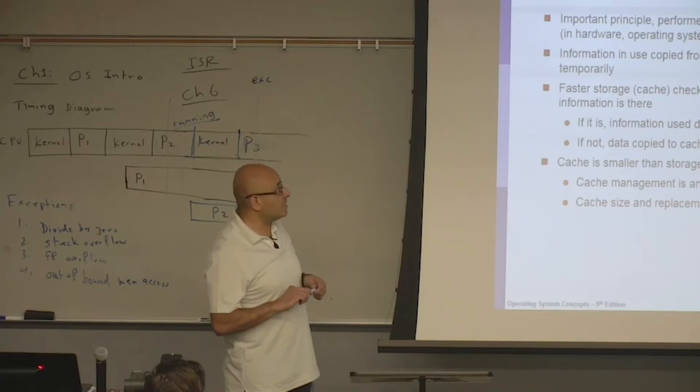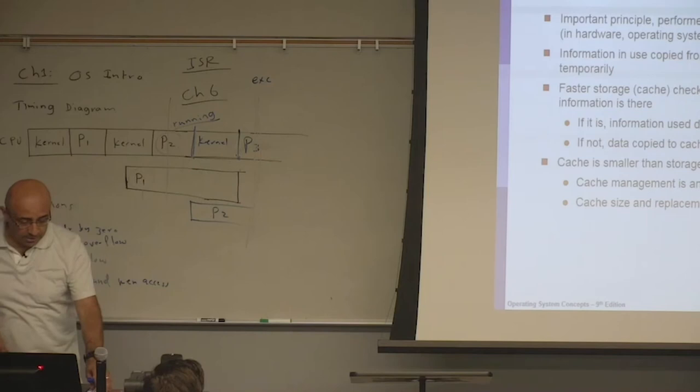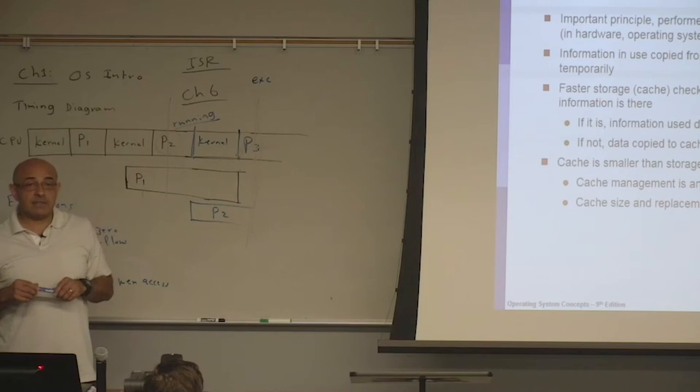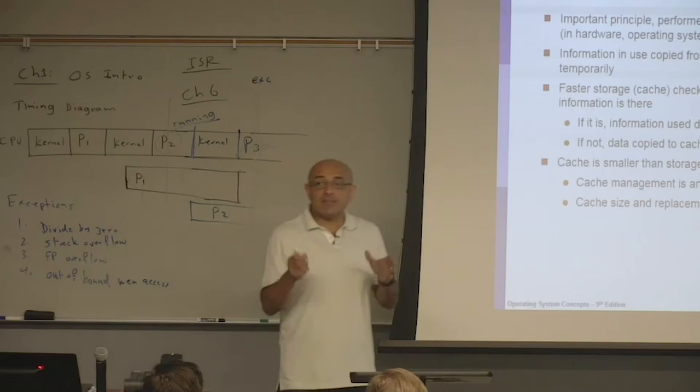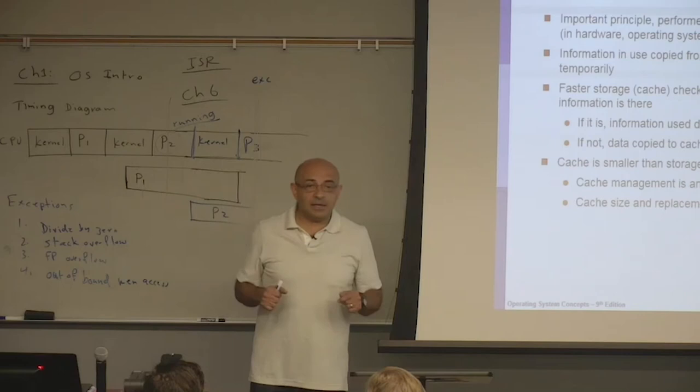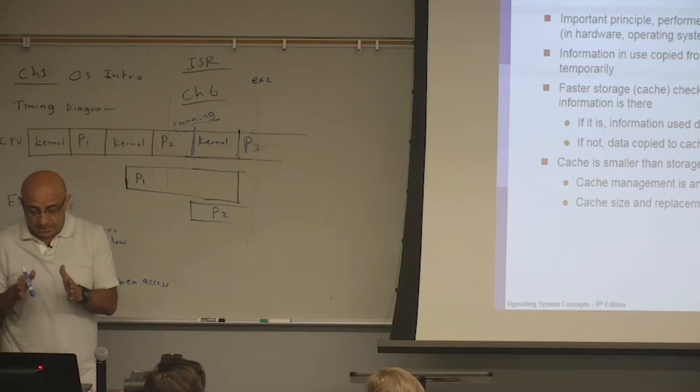Caching happens at multiple levels in a computer system — it even happens in web browsing, where you cache the web pages that the user accesses most frequently. The idea is that what you are accessing most frequently, you make it easily accessible by putting that in a faster storage device so that you can access the most frequently needed data more quickly.